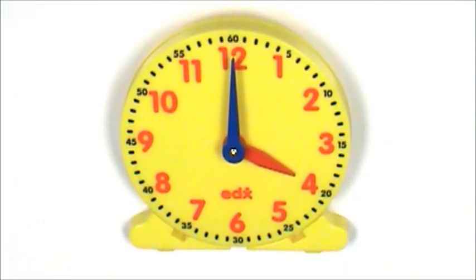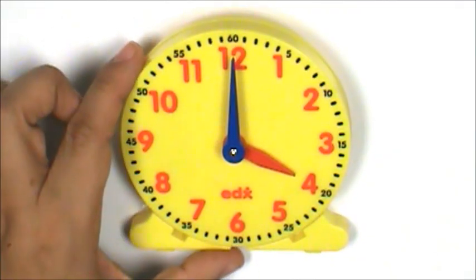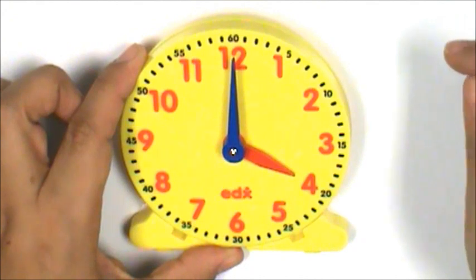Amy's ballet class started at 4 o'clock. My clock shows 4 o'clock. The hour hand is on the 4 and the minute hand is exactly on the 12. Now I will move the minute hand to show the time the ballet class started.